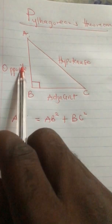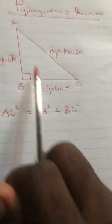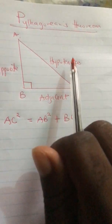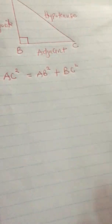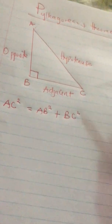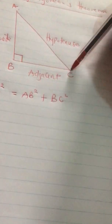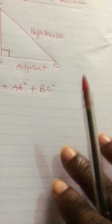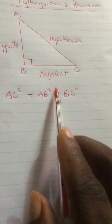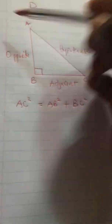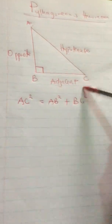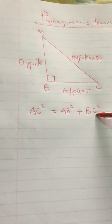Most of the time in your exam, they may give you two sides and tell you to find the third side. So the square of the longest side is equal to the sum of the squares of the other two sides. Let's look at an example so that you understand.